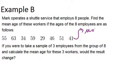So the sum of all 8 ages is 378, and you get that by adding up 55 plus 63 plus 34, and so on.